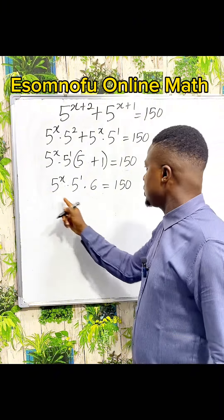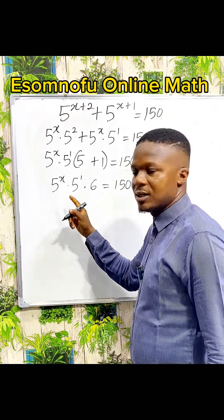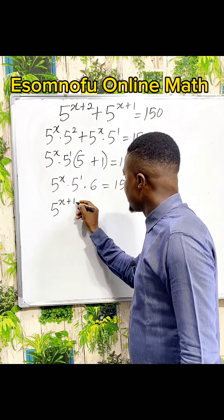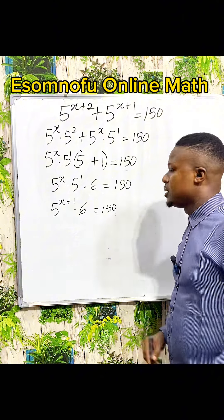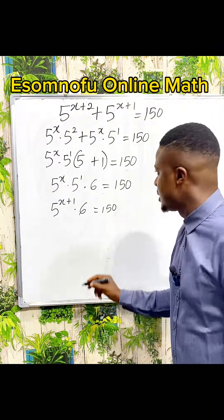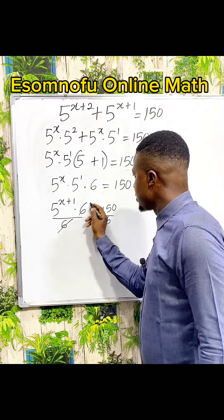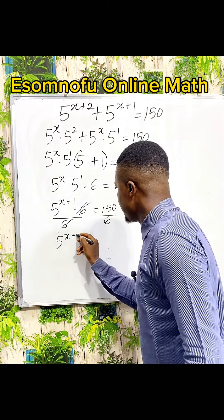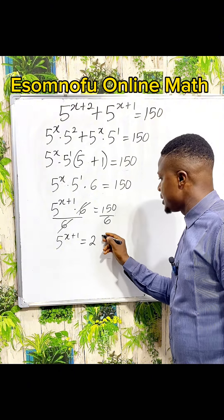These two terms have the same base, so you can simply add the powers. You can write it as 5 to the power of x plus 1, multiplied by 6, is equal to 150. To get rid of the 6, let us divide both sides by 6. Cancelling out the 6 leaves us with 5 to the power of x plus 1 is equal to 150 divided by 6, which is 25.